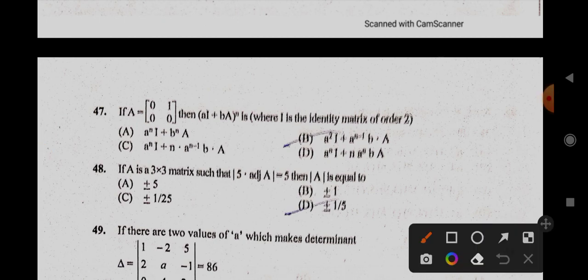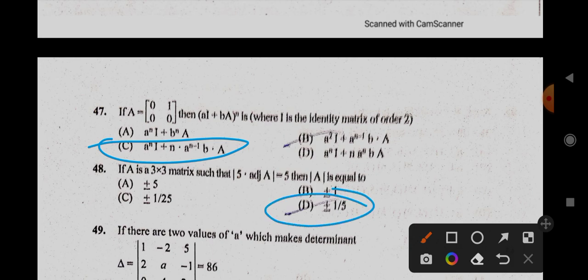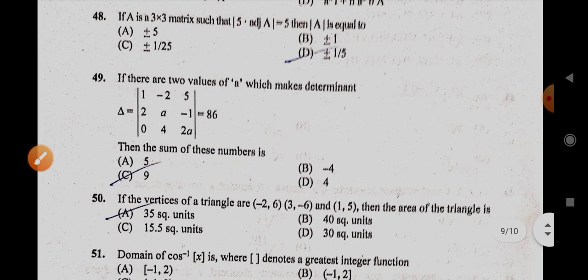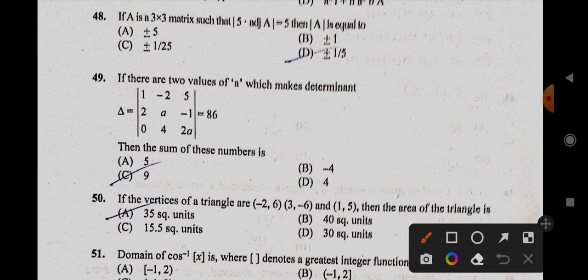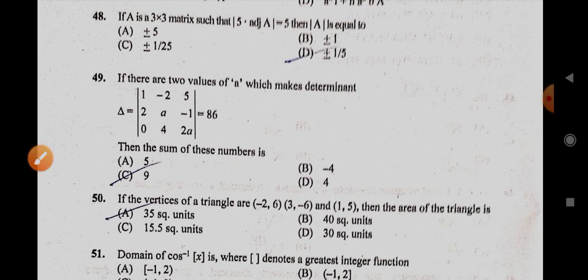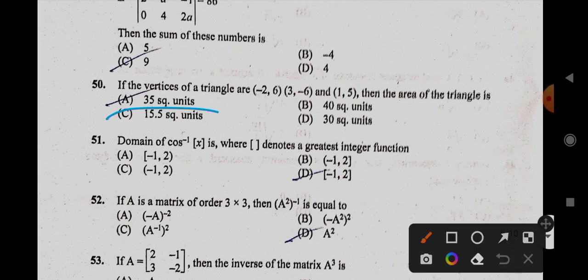47th is C option. 48th, it is plus or minus 1 by 5. 49th, it is B option, minus 4. 50th, it is 15.5.